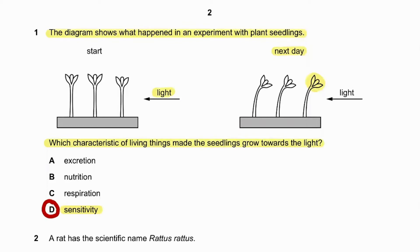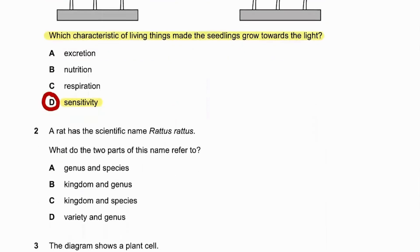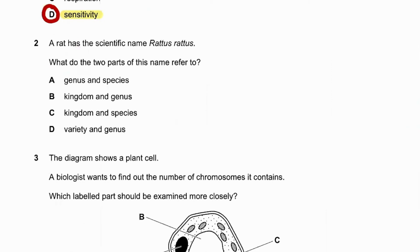Question number two: a rat has the scientific name Ratus ratus. What do the two parts of the name refer to? The first part of the name refers to the genus and the second part refers to the species. So genus and species — 2A will be the answer.